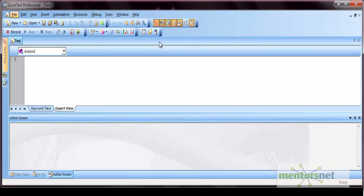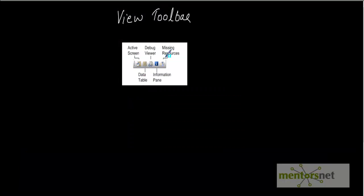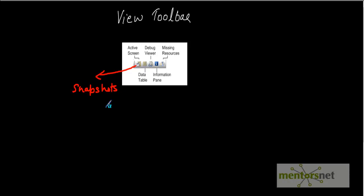The next is the view toolbar. From this view toolbar, you can open different panes in the test panes section, which contains information about the currently open test. The options include opening the active screen, the data table, the debug viewer, the information pane, and the missing resource pane. From the active screen option, you can see snapshots of your application — whatever operations you are performing on the application gets displayed as a snapshot here.